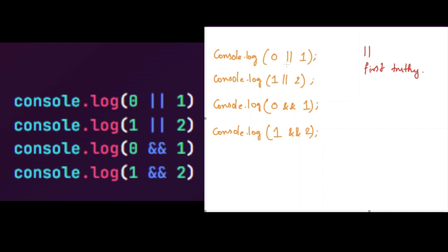Here we are using the OR operator between a falsy value and a truthy value. So what is the truthy value here? This is the first truthy value, so it will return 1 to the console. Here we are using it between two truthy values — it will return the first truthy value, so it will return 1 to the console.